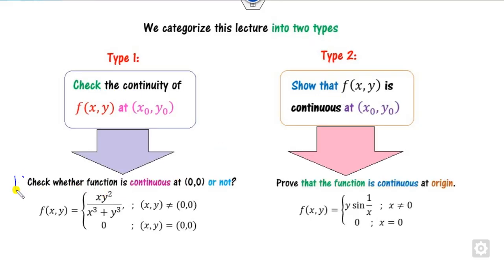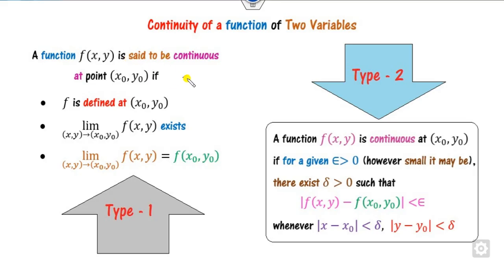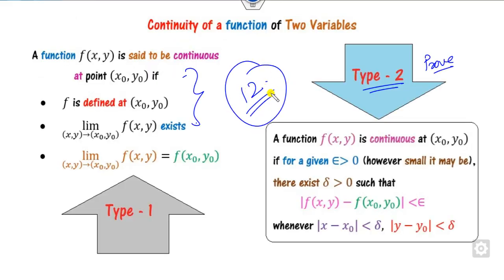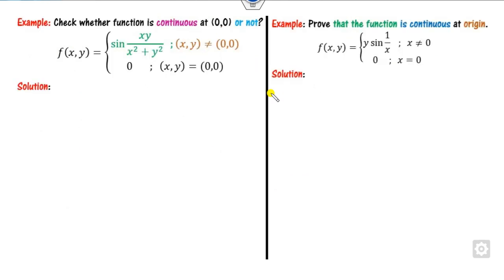Looking at the example questions: in question one, they ask you to check whether the function is continuous or not — that is Type 1. While in the second question, you have to prove that the function is continuous — that is Type 2. Whenever there are Type 1 questions, we apply the path-based definition, and whenever it is Type 2, we apply the epsilon-delta definition.